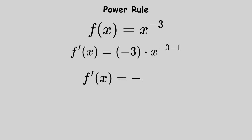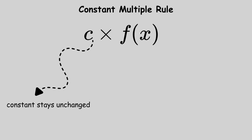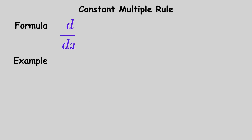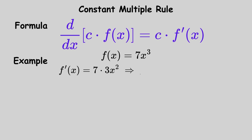So f prime of x equals negative 3x to the power negative 4. The constant multiple rule applies when a constant is multiplied by a function. The constant stays unchanged while you differentiate the function. The formula is: the derivative with respect to x of c times f of x equals c times f prime of x. For example, if f of x equals 7x cubed, the constant stays in front while x cubed becomes 3x squared, giving f prime of x equals 21x squared.